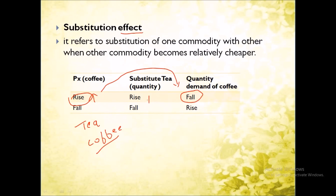Moving further is the Substitution Effect. For example, tea and coffee are substitute goods. If the price of coffee increases, the demand for tea will ultimately increase — even though the price of tea hasn't changed. The change in price of coffee has changed the demand for tea because they are substitutes. The substitution effect refers to the substitution of one commodity with another when the other commodity becomes relatively cheaper.